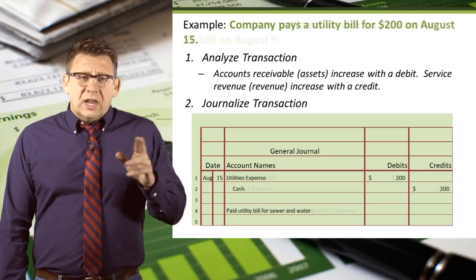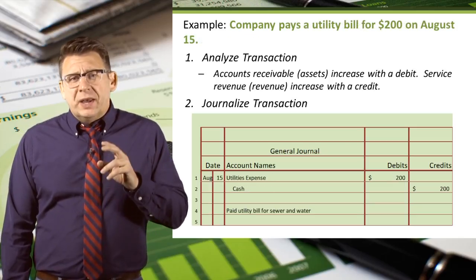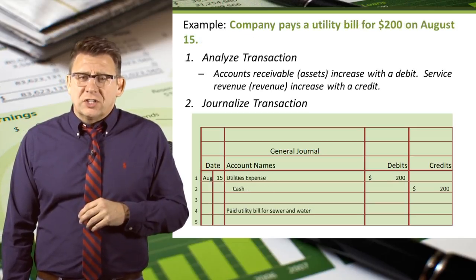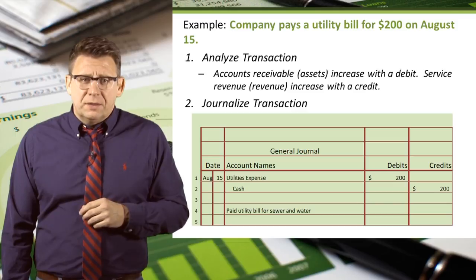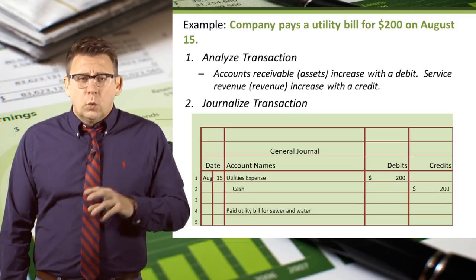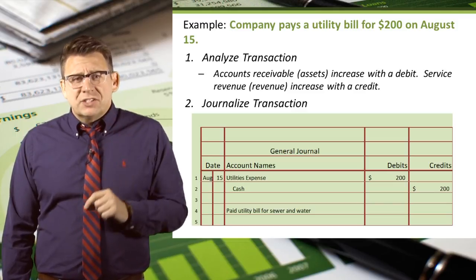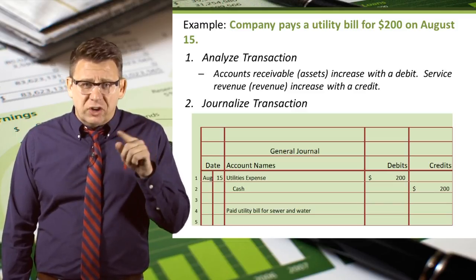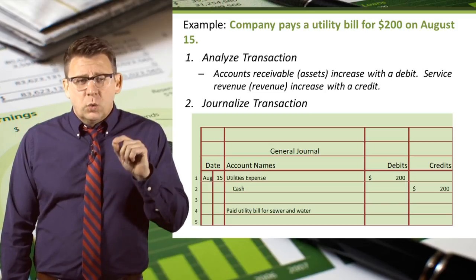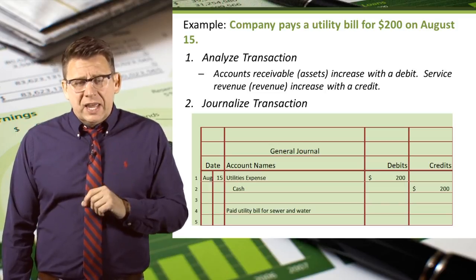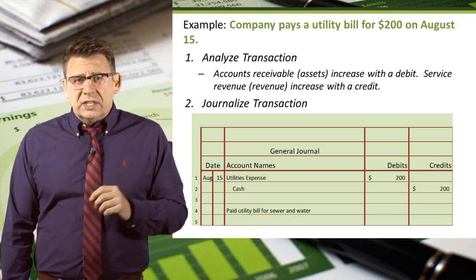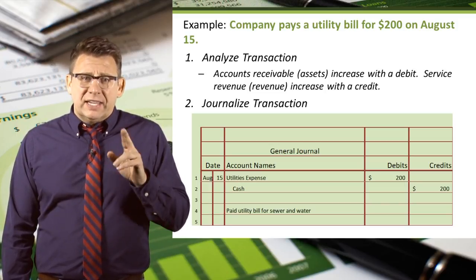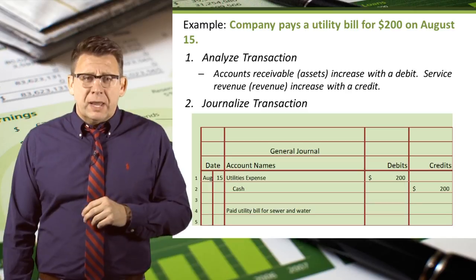The last example: a company pays a utility bill for $200 on August 15th. When we analyze this transaction, we determine that cash, an asset account, is decreased with a credit, and utilities expense, an expense account, is increased with a debit.